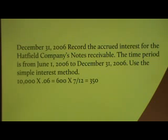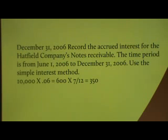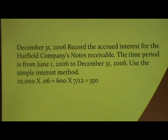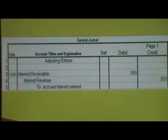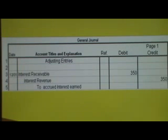On December 31st 2006, record the accrued interest for the Hatfield company notes receivable. The time period is from June 1st to December 31st. Use the simple interest method: the original principal of ten thousand times the rate of six percent (0.06) equals six hundred. The loan was not for a complete year but for seven months, so you multiply by seven and divide by twelve. The resulting interest will be three hundred and fifty dollars. To record this in the journal entry, you will debit interest receivable and credit interest revenue for the amount recognized at the end of the first fiscal period.